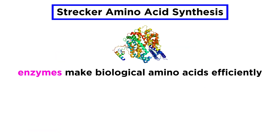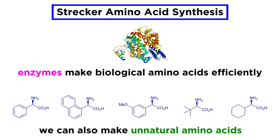While amino acids are produced industrially by enzymatic methods because it's so cheap, the Strecker synthesis can be extremely useful for producing unnatural amino acids. However, in order for it to be really useful, a procedure must be developed to produce only a single enantiomer of the desired target, because separation by resolution is often tedious and inefficient.